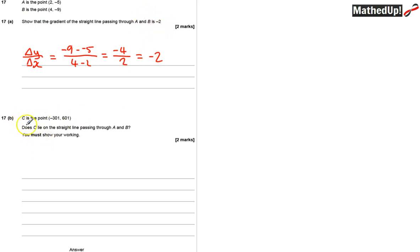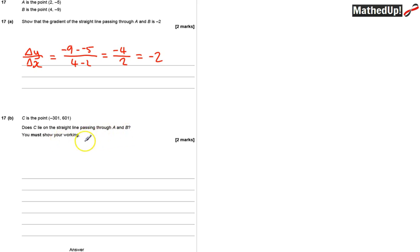Part B. C is the point (-301, 601). Does C lie on the straight line passing through A and B? We need to show our working out.